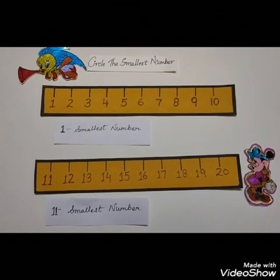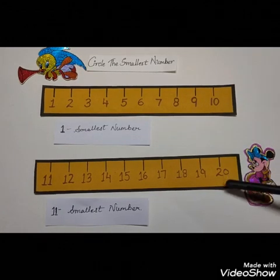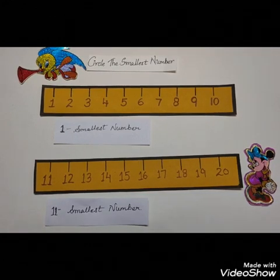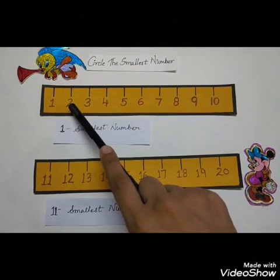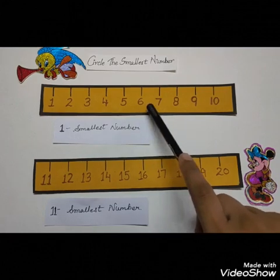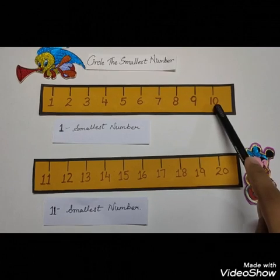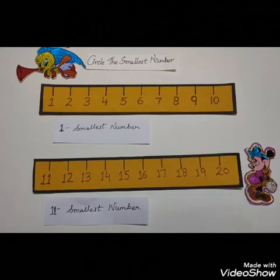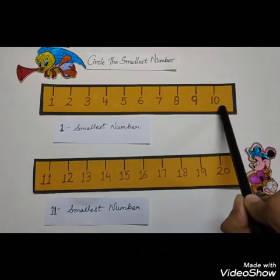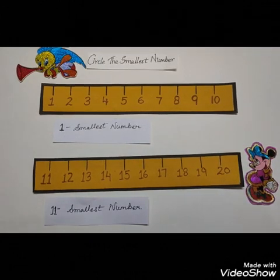Can you see number lines over here? There are two number lines — one is 1 to 10 and the second is 11 to 20. Now we will count numbers 1 to 10. Count with me: 1, 2, 3, 4, 5, 6, 7, 8, 9, 10. As we start counting from 1 to 10, the 1 is the smallest number and 10 becomes the biggest number.